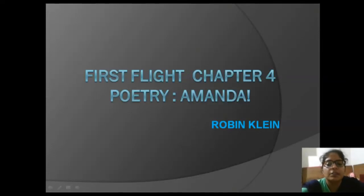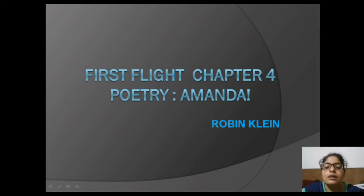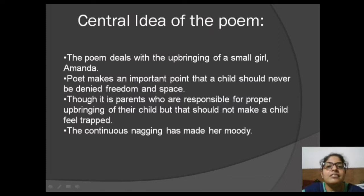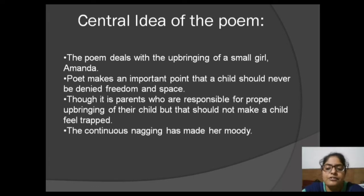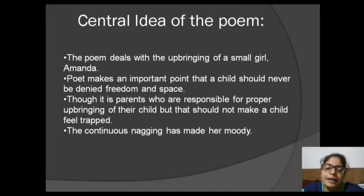Welcome to the English class. Today we will talk about First Flight Chapter 4 Poetry, that is 'Amanda' written by Robin Klein. In this story, the poet describes the upbringing of a small girl named Amanda. The poet makes an important point that a child should never be denied freedom and space, though it is the parents' duty to be responsible for proper upbringing. But that should not make a child feel trapped, and the continuous nagging has made Amanda moody and uncooperative with her parents.